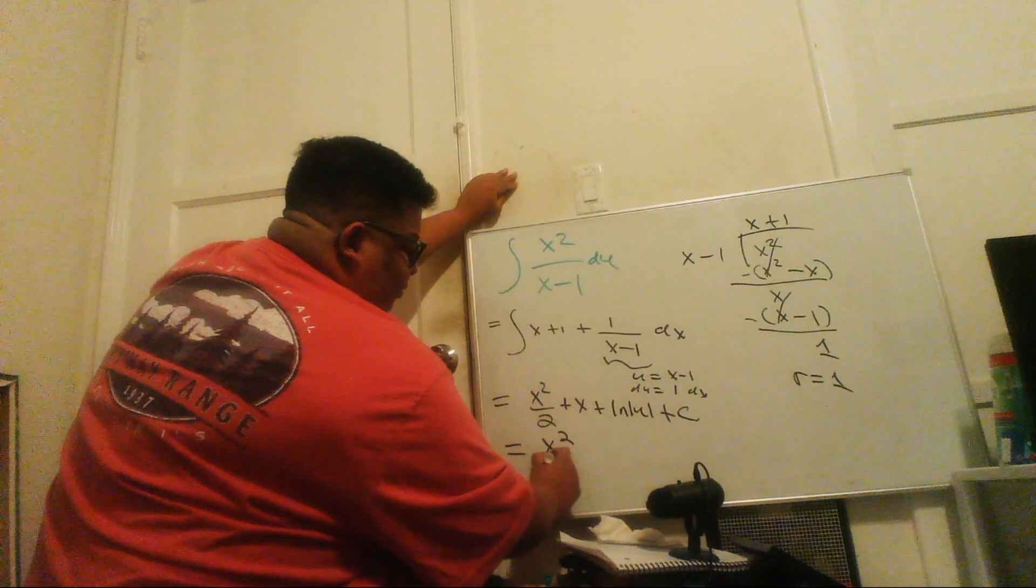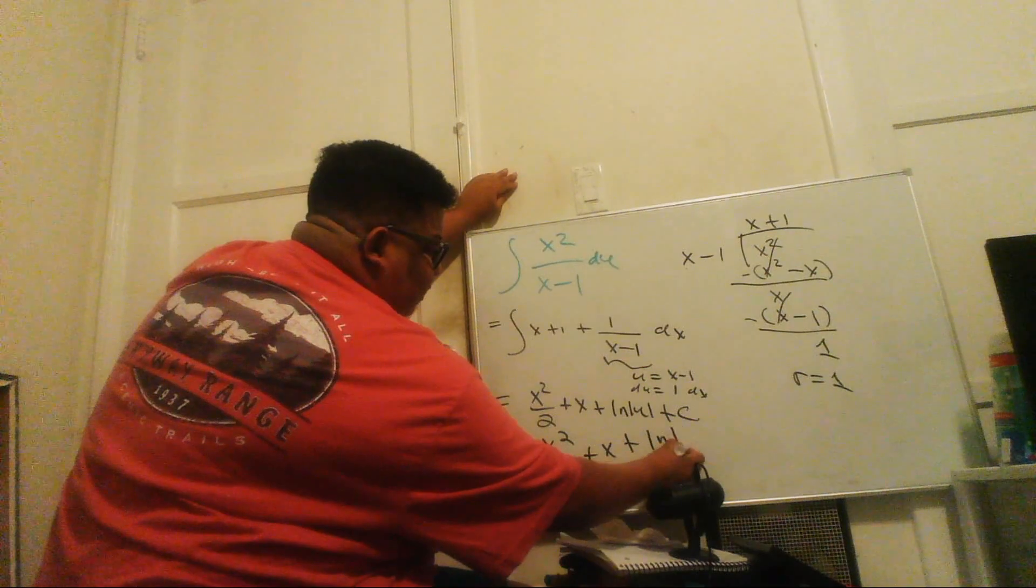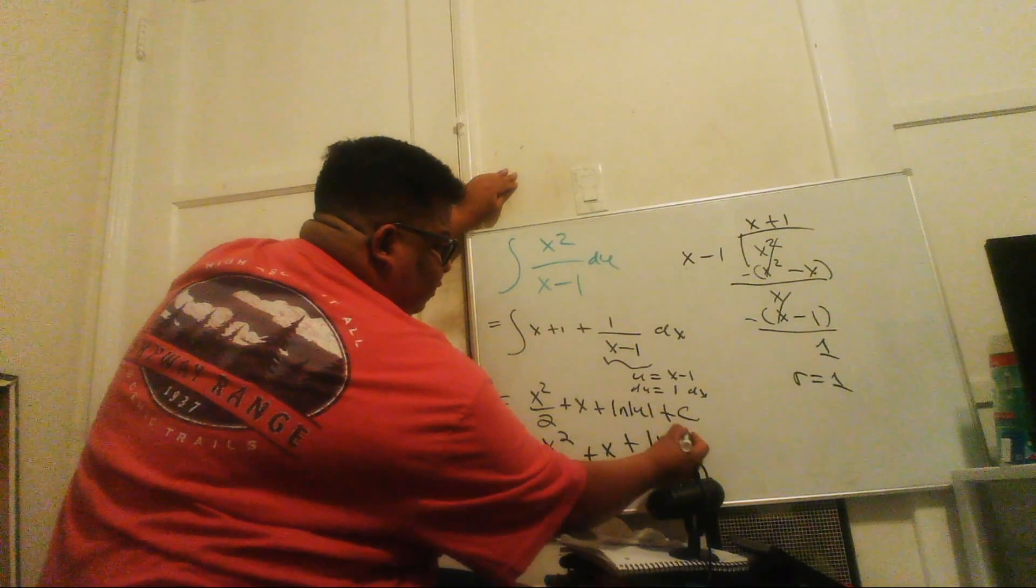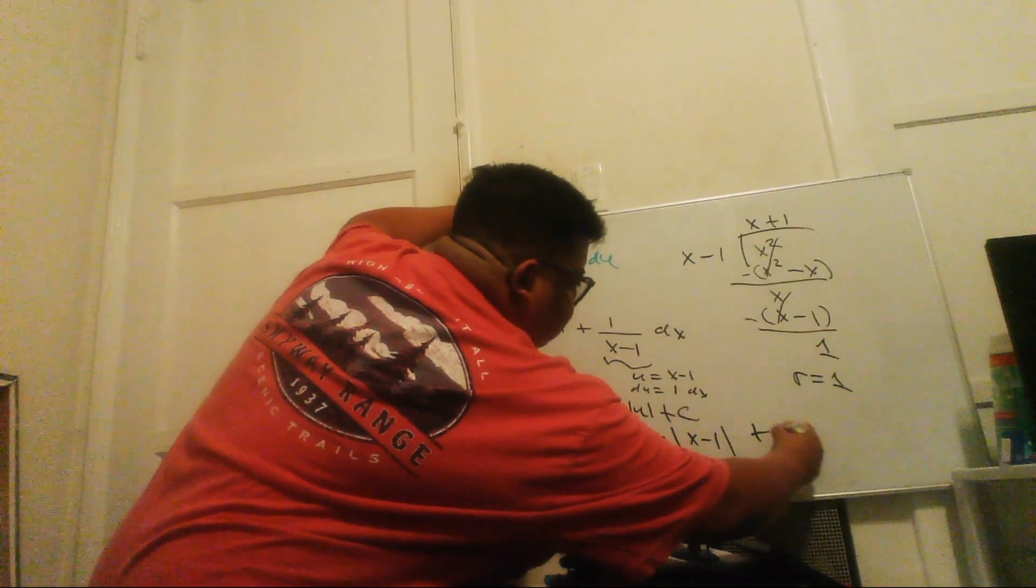So x squared over 2 plus x plus ln of x minus 1 plus c. And that completes the problem.